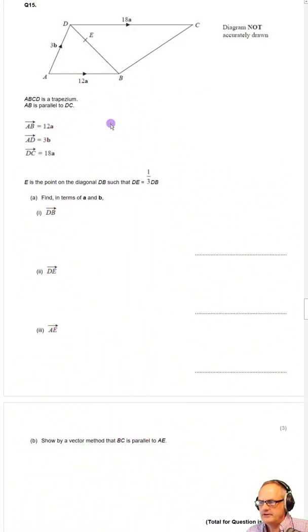Right here we have a GCC question and we're going to be looking mainly at the idea of when vectors are parallel to other vectors. We're told that AB is parallel to DC in this question. A vector is parallel to another vector when one is a multiple of the other.